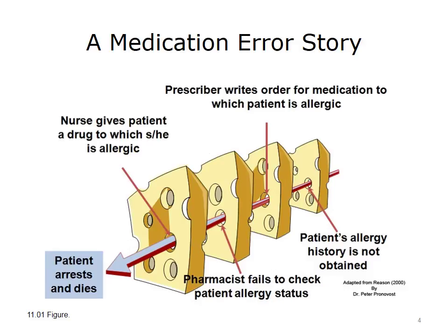Let's take a classic medication error using the Swiss cheese model of system failure proposed by James Reason. He likened the healthcare system to a stack of Swiss cheese slices, where each slice represents an action or event in the care delivery process. The holes in the cheese are places that a process can fail despite everyone's best intentions. Each cheese slice is a defensive layer in the process. When an error passes through one of the gaps in the line of defense, it usually bumps up against another defense. Sometimes the Swiss cheese stacks line up such that all of the holes are aligned and the error reaches the patient — as when a pharmacist fails to check a patient's allergy status, the prescriber writes an order for a medication to which the patient was allergic, the nurse gives the patient the drug, and the patient arrests and dies.